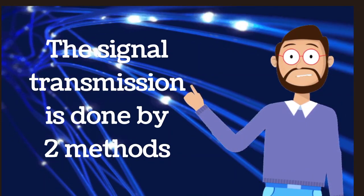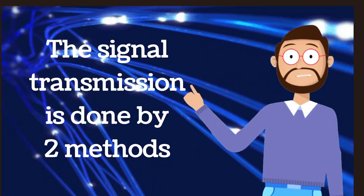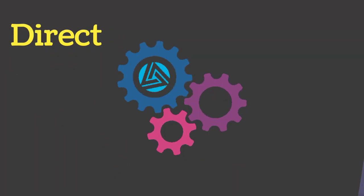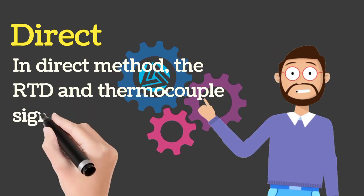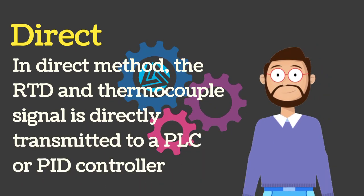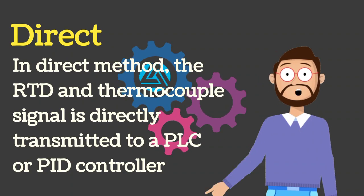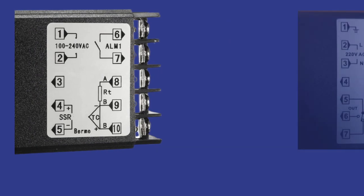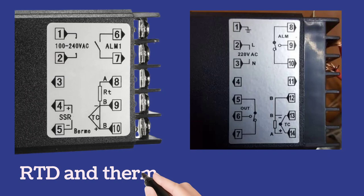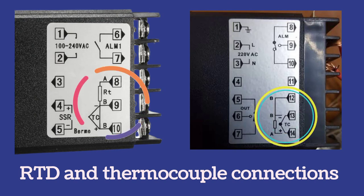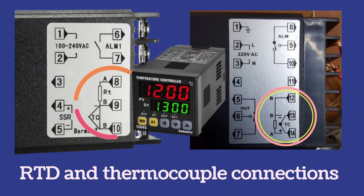Now, come to the signal transmission, and it is done by two methods. The first method is the direct method. As the name suggests, the signals of RTD and thermocouple are transmitted directly to any controller like PLC, PID, or any indicator — wires are directly connected to PLC/DCS, PID, or indicator. RTD and thermocouple connections are shown with the help of left and right circles in the diagrams. Controller and indicator show these readings, and the controller also controls the temperature according to the set point.